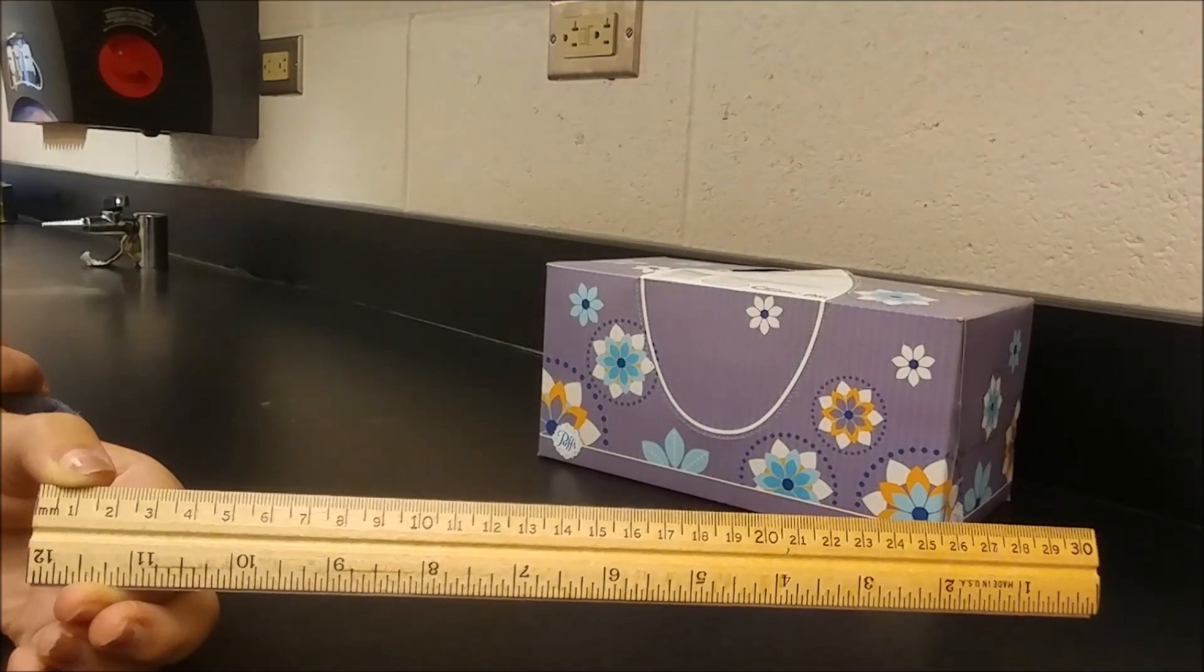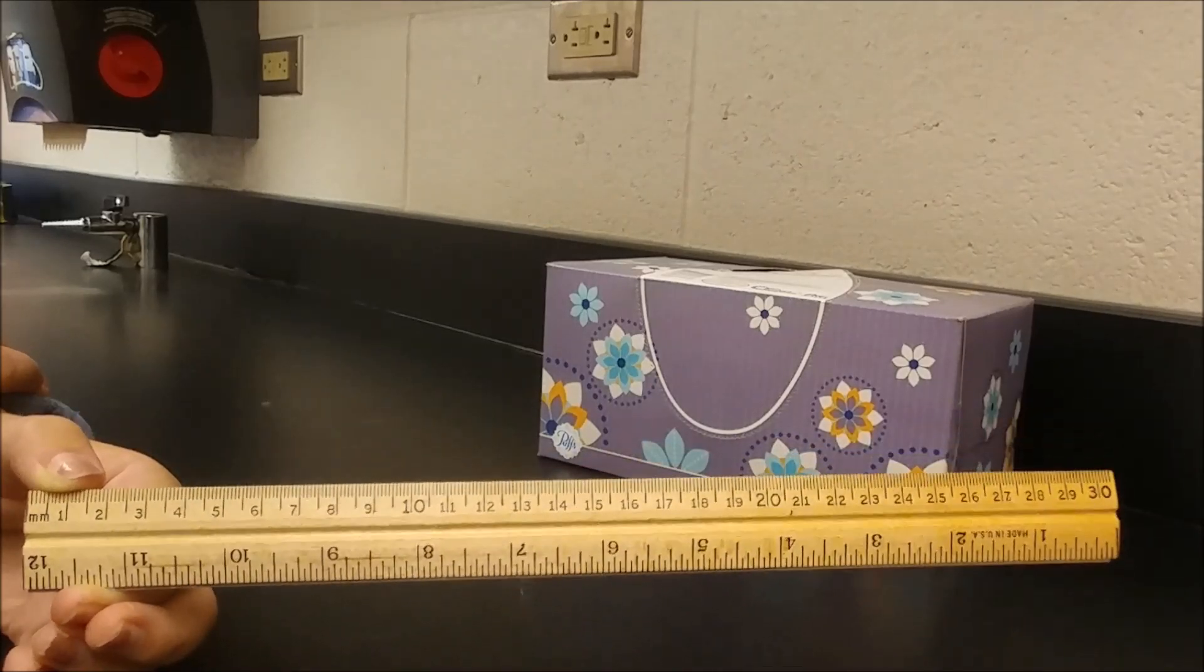Rulers are used to measure some sort of distance like length, width, or height, but rulers can only measure in straight lines.